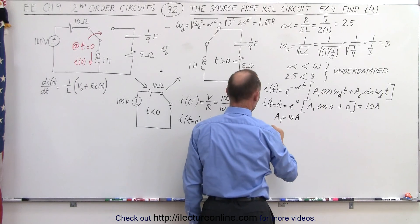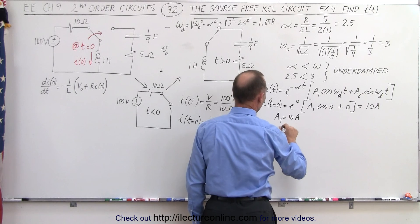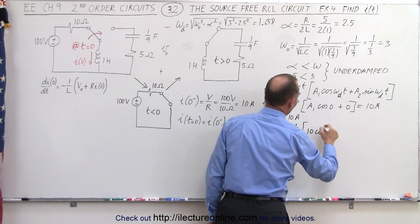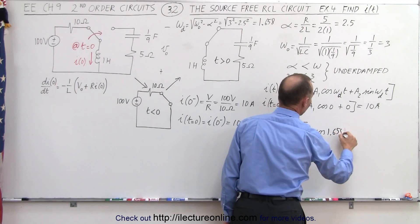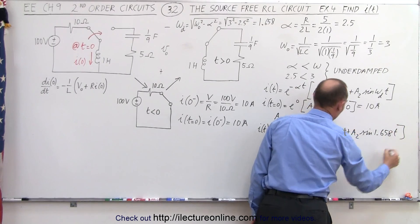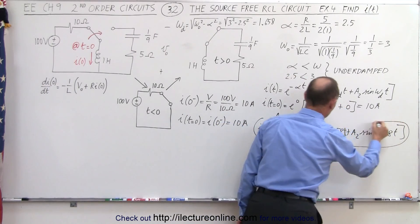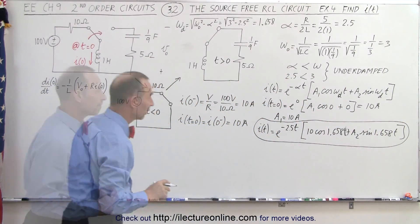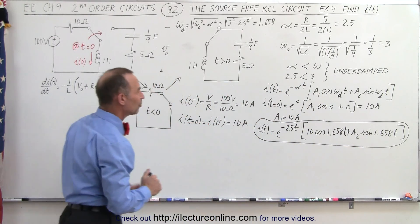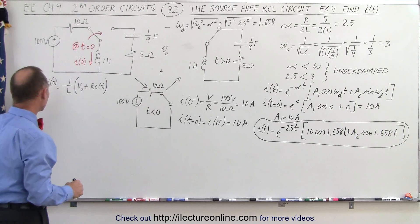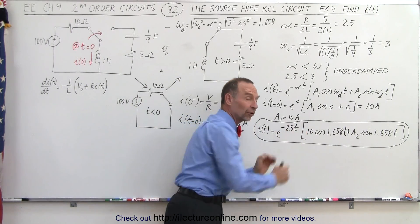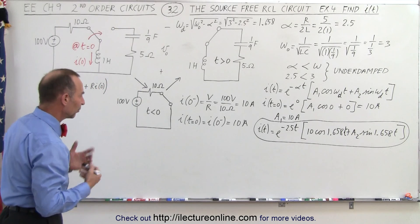Now we can plug in the known values. I as a function of time equals e to the minus 2.5t times 10 times the cosine of 1.658t, plus a2 times the sine of 1.658t. We have everything except a2. To find a2, we need to take the derivative of i with respect to time, evaluate it at t equals zero, and set it equal to the initial di/dt from the circuit.